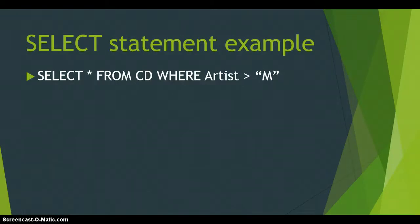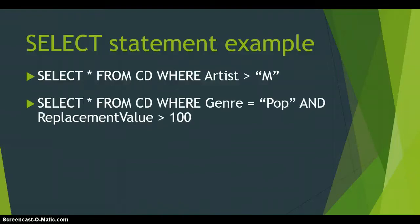These queries are great, but what happens if you want more than one criteria? There are different scenarios: when you want both criteria to be true at the same time, or when you want only one or the other to be true. The first case is when we want both criteria true simultaneously — for example, all data from the CD table where the genre must be pop AND the replacement value must be greater than 100. For that we use the AND clause between our two conditions.